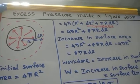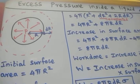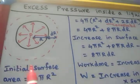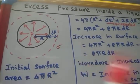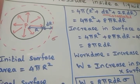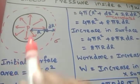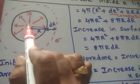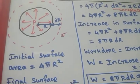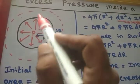Excess pressure inside a liquid drop. Consider a spherical liquid drop of radius R. Let sigma be the surface tension of the liquid. Due to its spherical shape, there is an excess pressure P inside the drop over that on the outside.